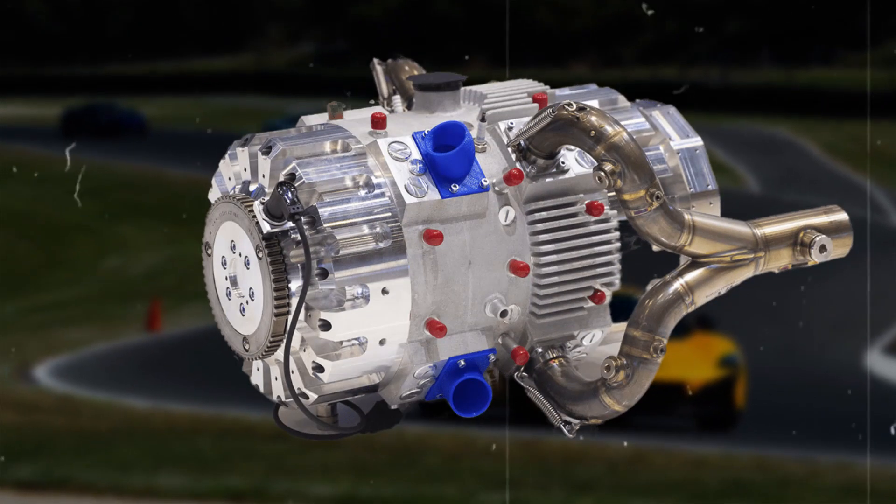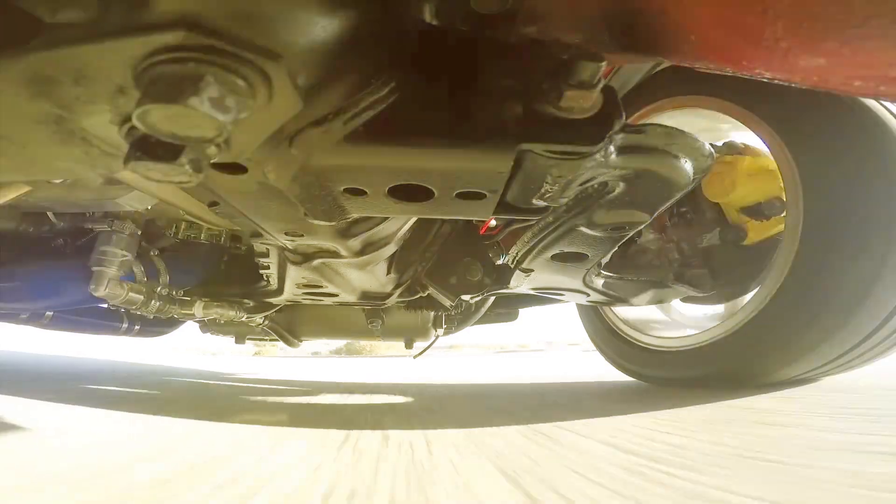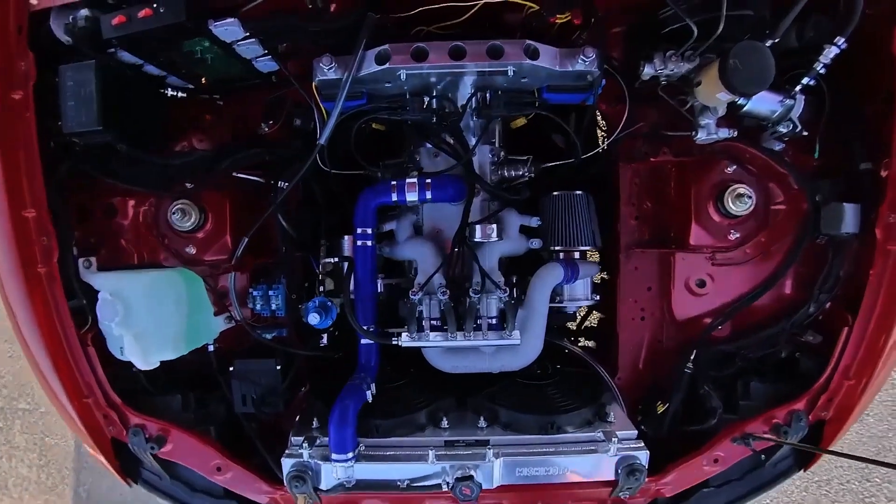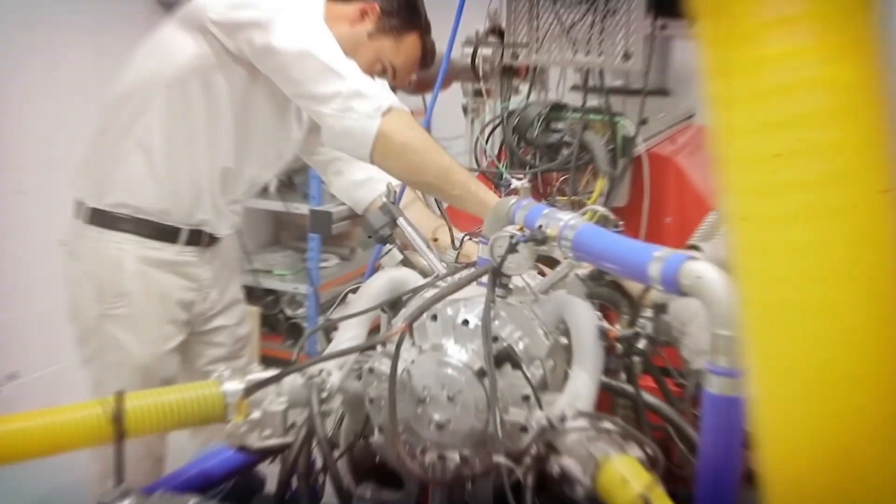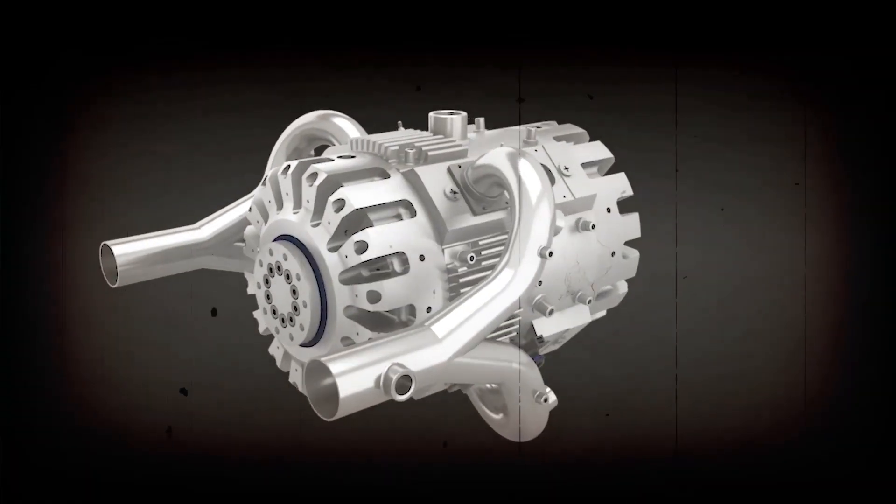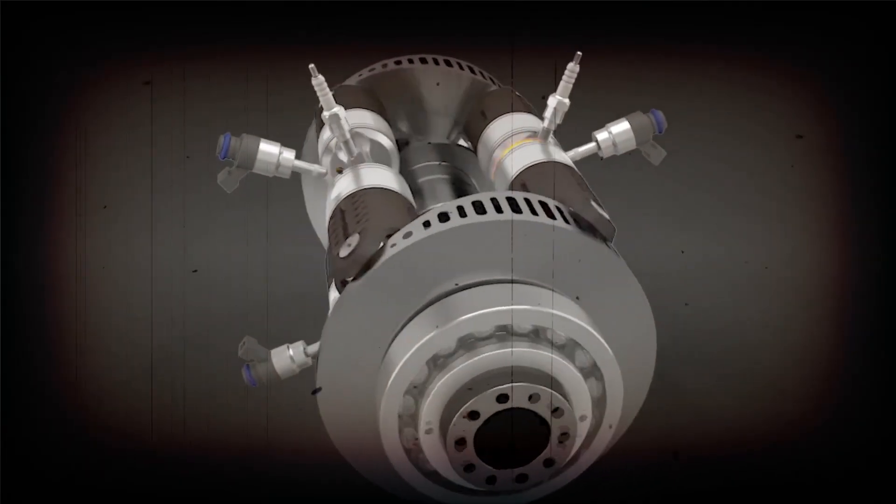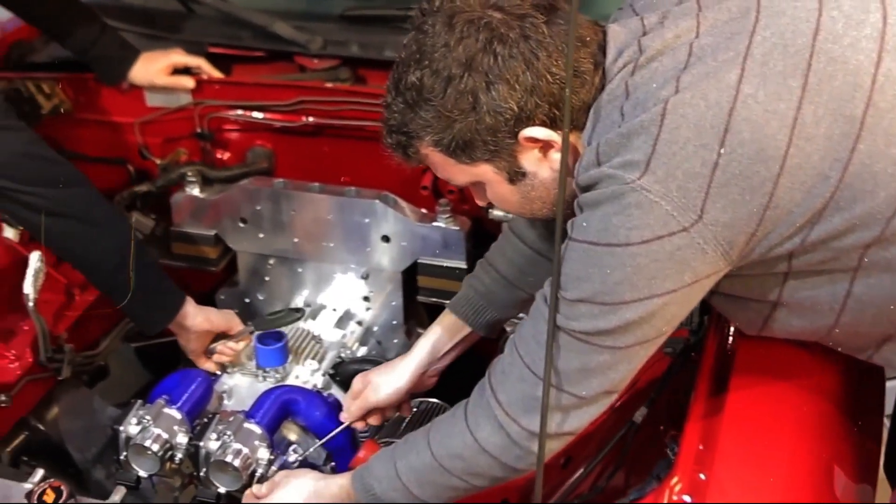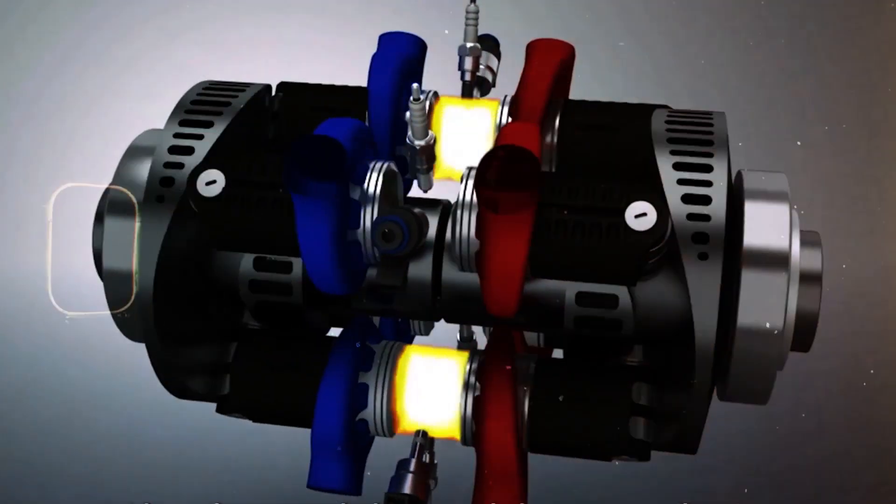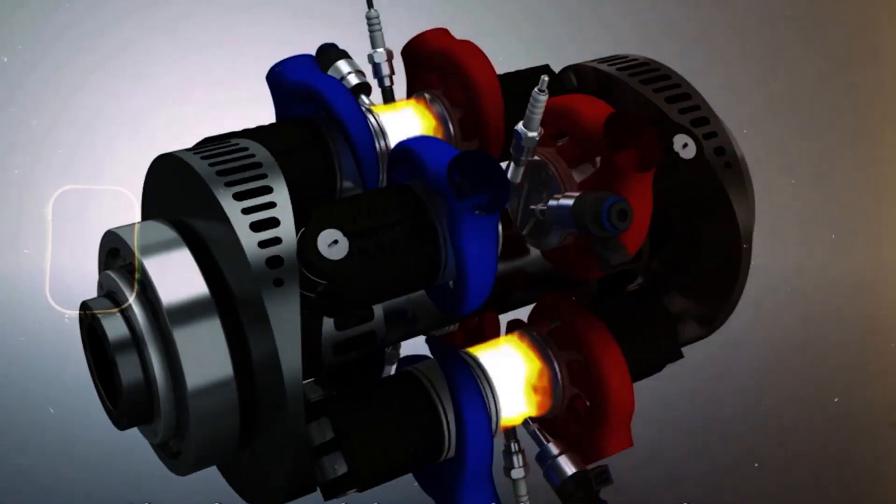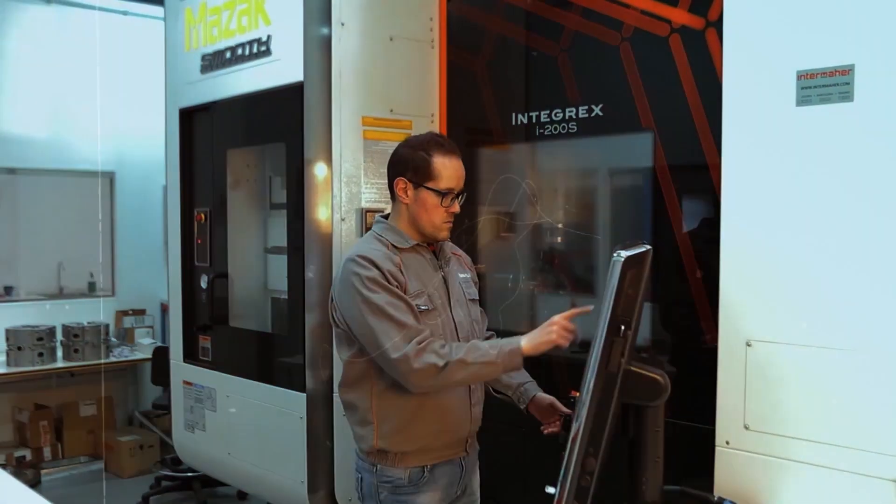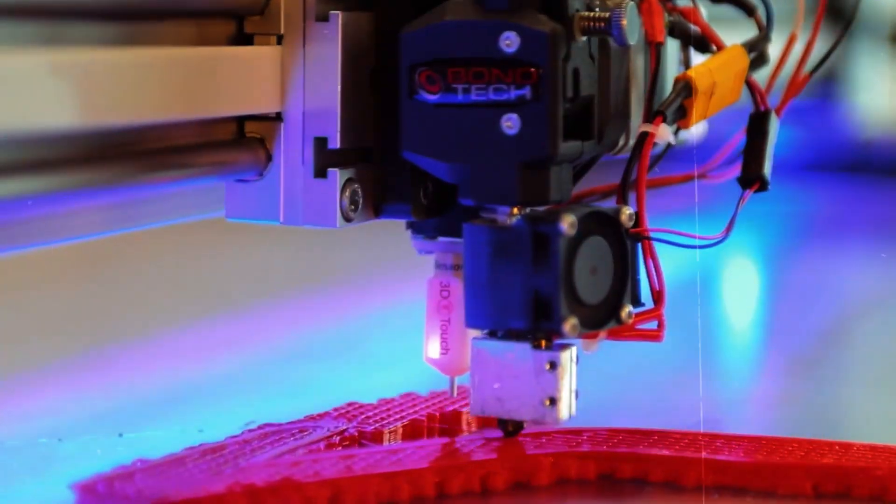But the merits of the INN engine extend even further. One of its standout attributes is the impeccable balance it achieves, both primary and secondary. The opposed piston configuration neutralizes the forces exerted by each piston pair, leading to remarkably smooth operation. Moreover, the absence of a connecting rod means the engine attains a flawless secondary balance as well. This fusion of innovative features and engineering excellence makes the INN engine a standout candidate in the quest for automotive efficiency and performance.